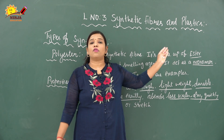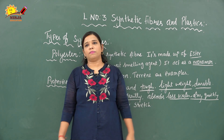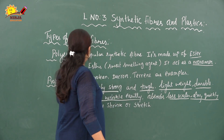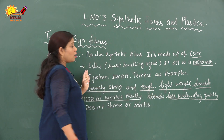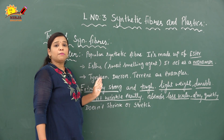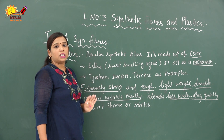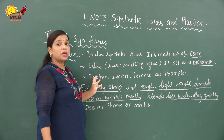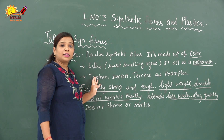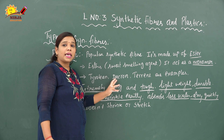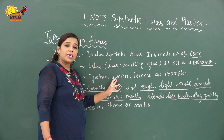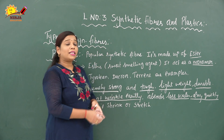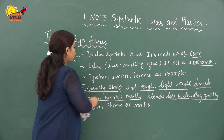There are different types of polyester. The examples are: first, terylene; second, dacron; and third, terrine. These are the examples of polyester.